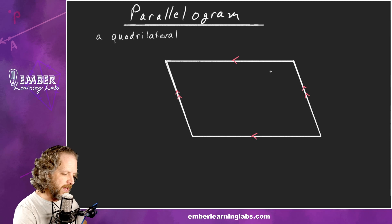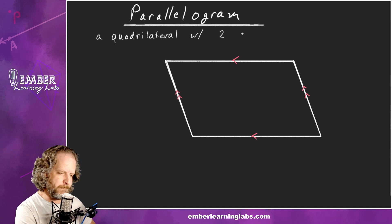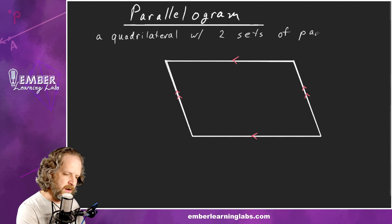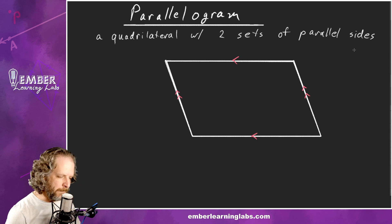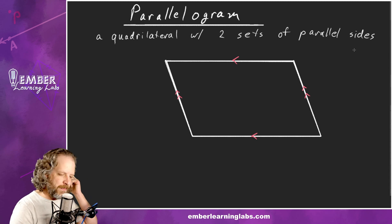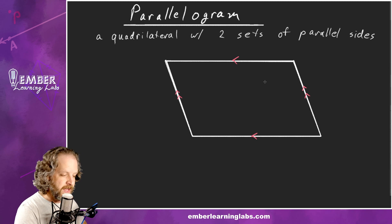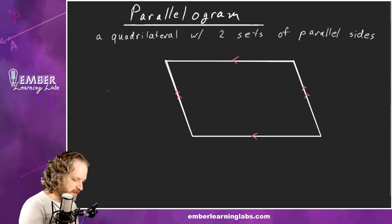A parallelogram is a quadrilateral with two sets of parallel sides. These are symbols for parallel lines, so these two lines are parallel and these two lines are parallel.